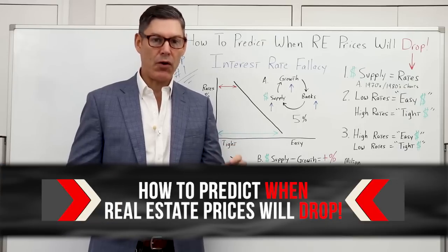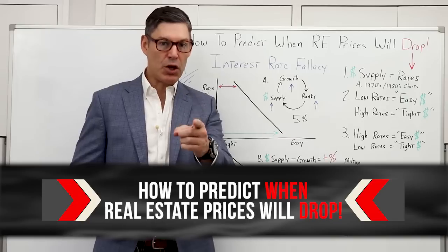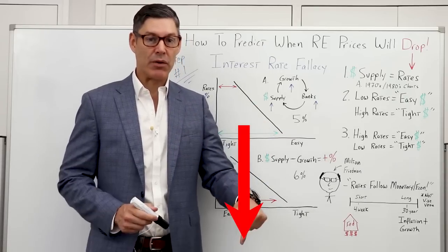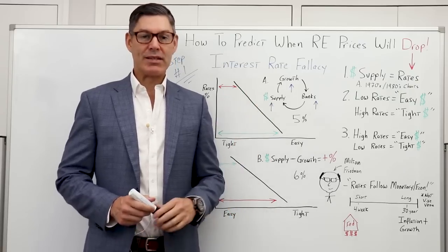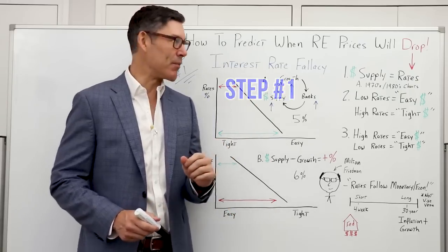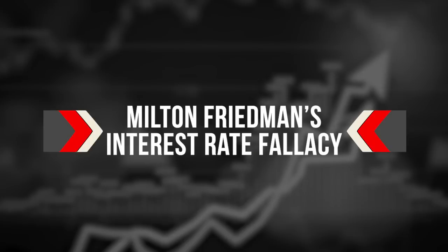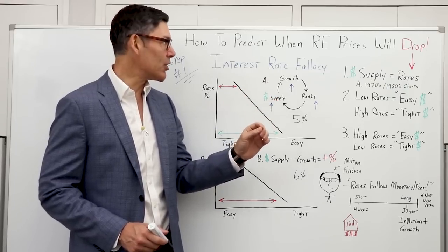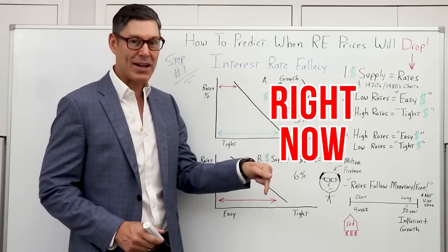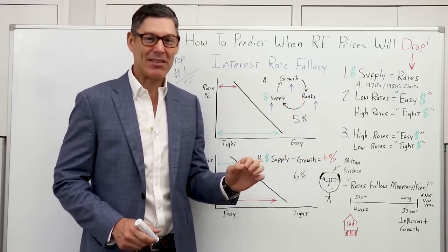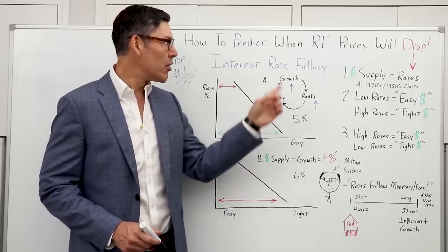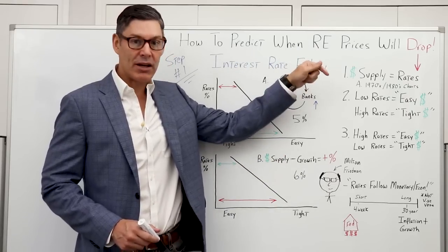I'm going to reveal a powerful indicator that'll help you predict when real estate prices will come down. I'm going to explain this in three simple, fast steps. Step number one: let's go over Milton Friedman's interest rate fallacy. I'll share this powerful signal with you now — the CliffsNotes version. It's basically when the Fed starts to lower rates, that's when you really need to watch out for real estate prices coming down.